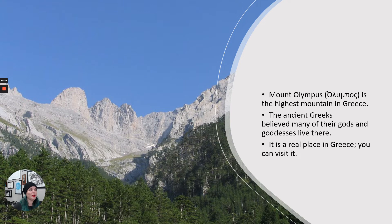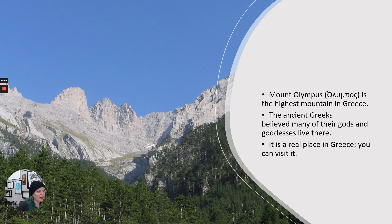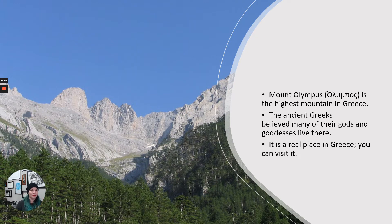I'm here to tell you, Mount Olympus is a real place. You can visit it, you can go to it. It is in Greece — it is the highest mountain in Greece. The ancient Greeks believed that many of their gods and goddesses lived there, which is how they organized them: the Olympian gods and goddesses, and those who weren't on Mount Olympus. It kind of looks a little bit to me like Half Dome at Yosemite in California.